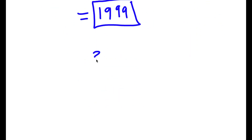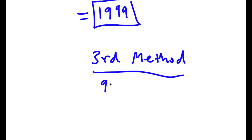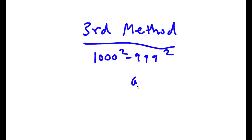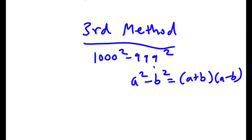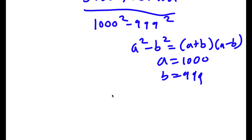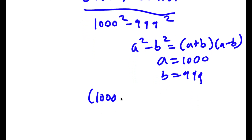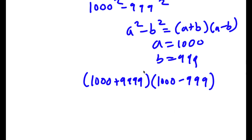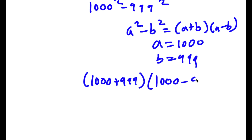Finally, our third method. For the original expression 1,000 squared minus 999 squared, I use the difference of squares identity: a squared minus b squared equals (a plus b)(a minus b). Here a is 1,000 and b is 999, so I have (1,000 plus 999) times (1,000 minus 999).